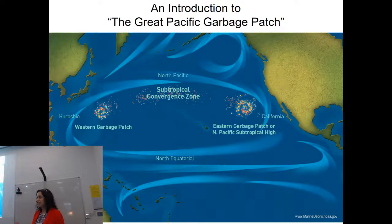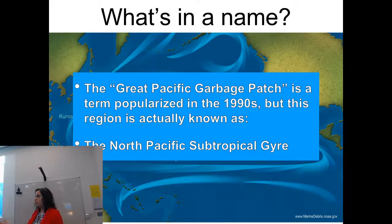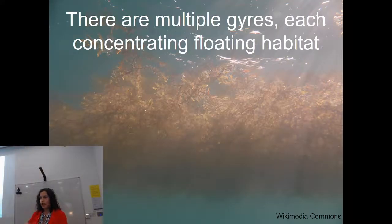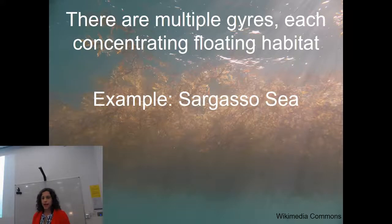I'd like to start with a little background on the Great Pacific Garbage Patch. This is a term popularized in the 1990s, but it refers to what scientists call the North Pacific subtropical gyre. There are multiple gyres across the world's oceans, and in all cases they concentrate floating objects or floating habitat — places where currents converge and swirl, so large masses of floating objects get concentrated.